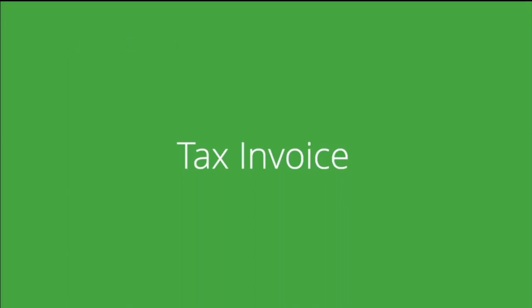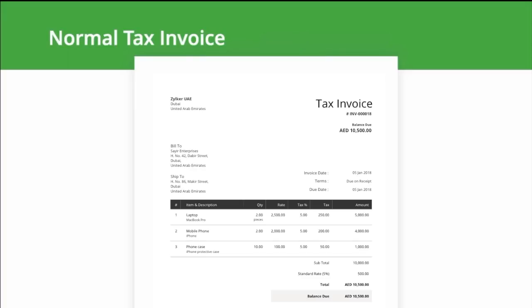Tax invoice. All invoices must be issued within 14 calendar days of the date of supply. A VAT-compliant invoice should contain the following details: the words 'tax invoice' clearly displayed; the sequential tax invoice number; the name, address, and tax registration number of both supplier and recipient; the date of issue; and if the date of supply differs from the date of issue, the date of supply should also be mentioned.